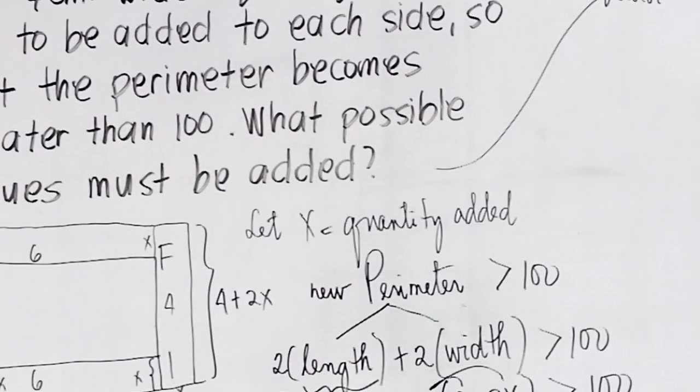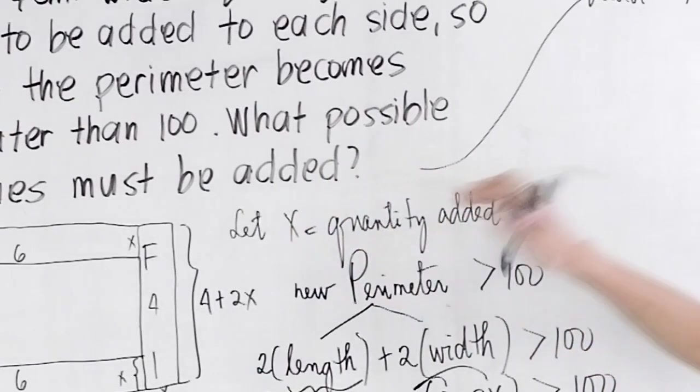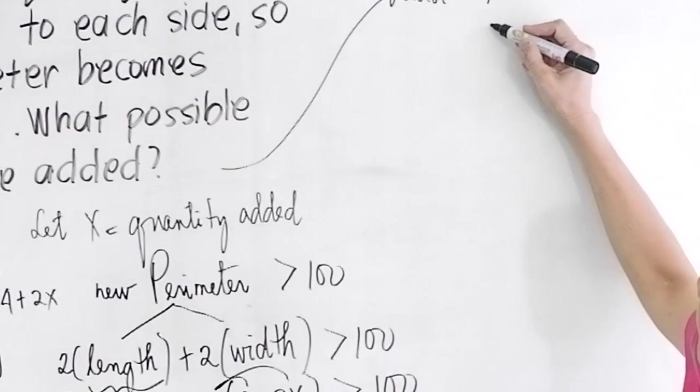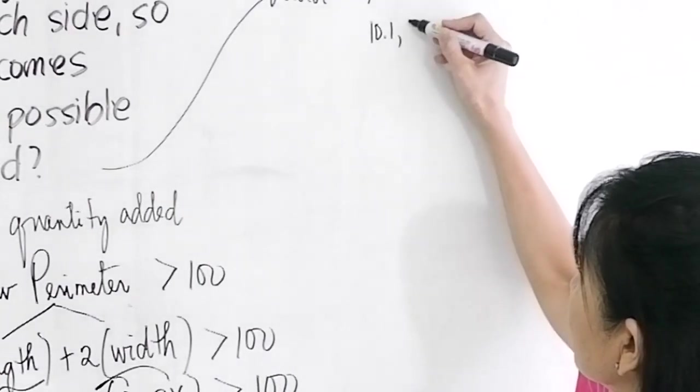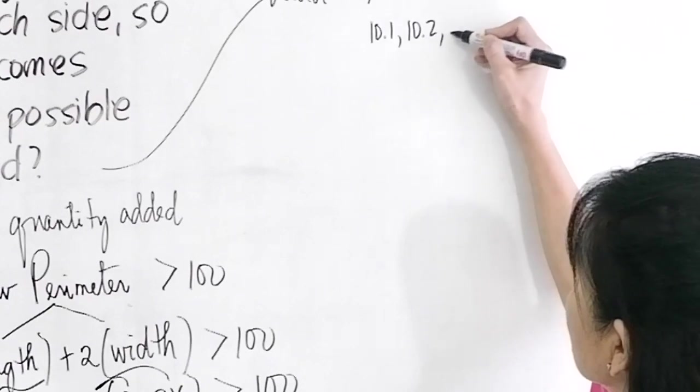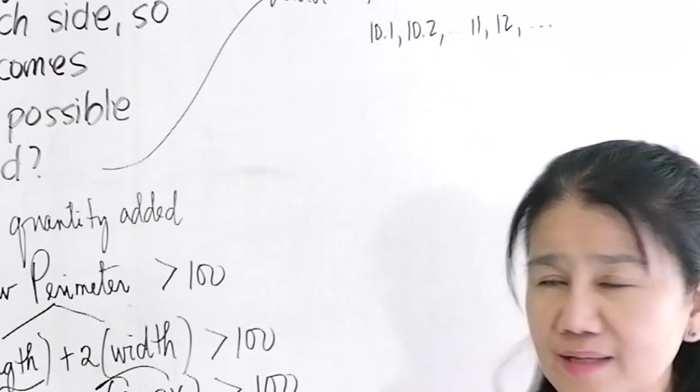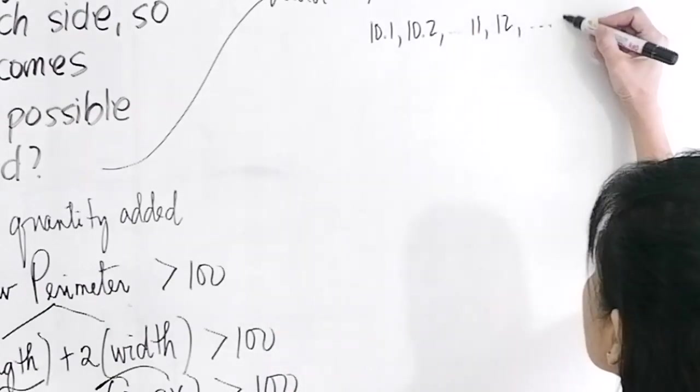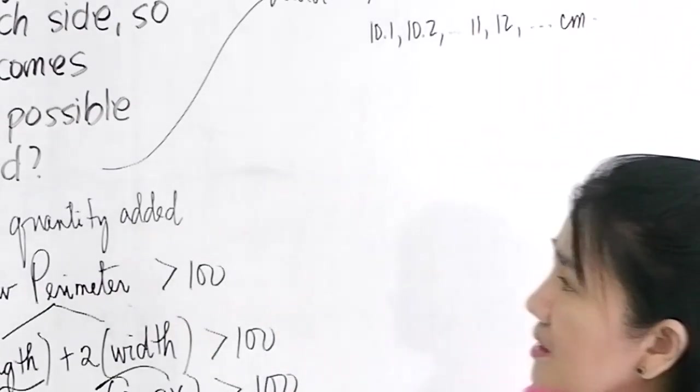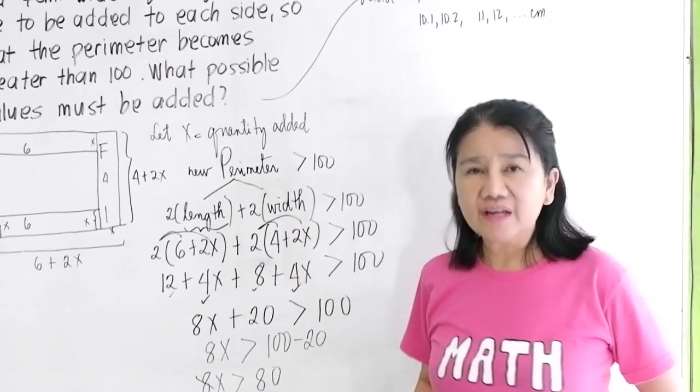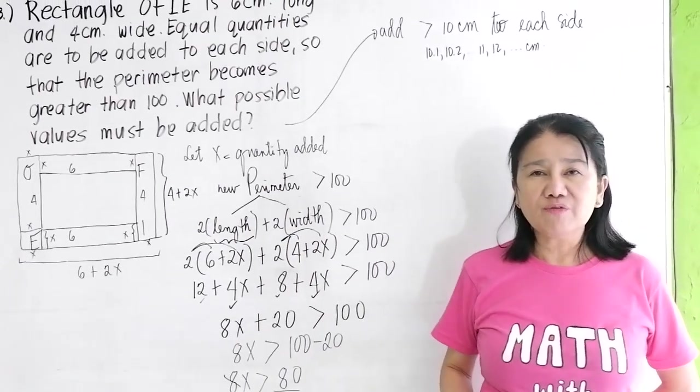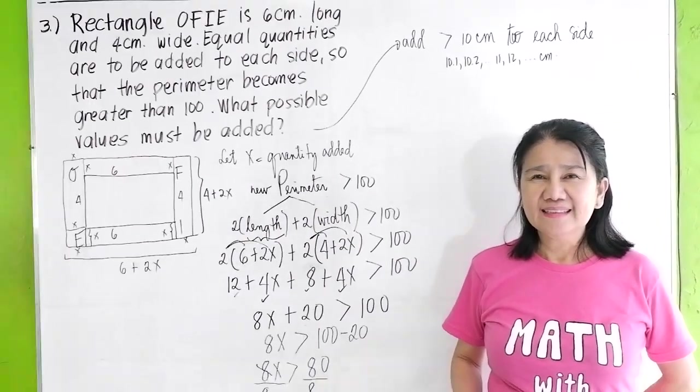When the question is what are the possible values, so you'll be adding 10.1, 10.2, etc., 11, 12, and so on and so forth, cm, to each side of the original rectangle OFIP.